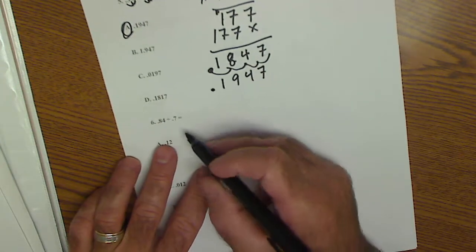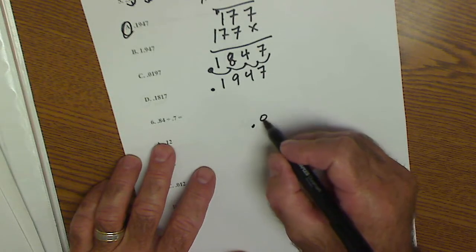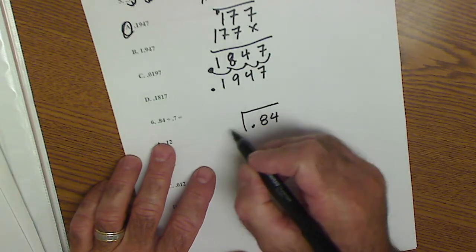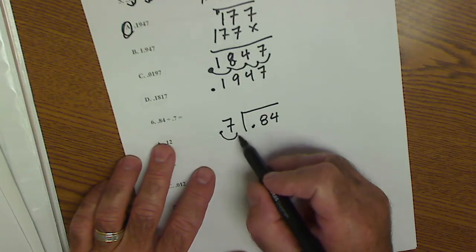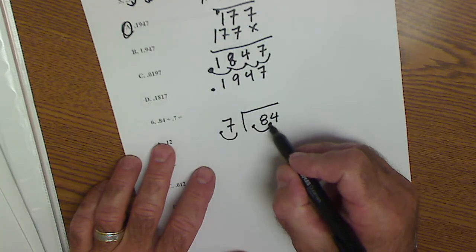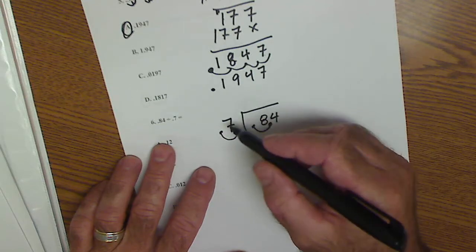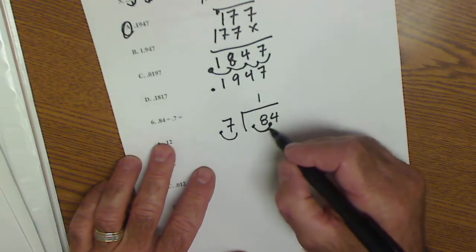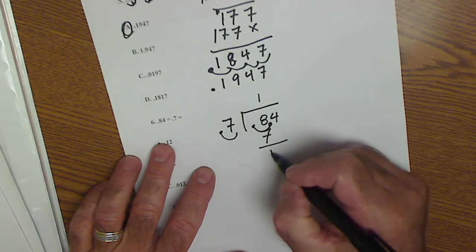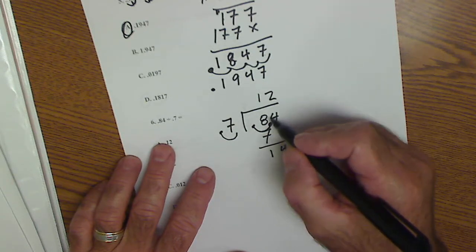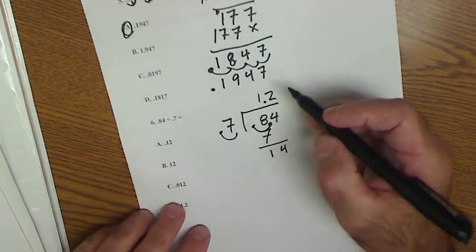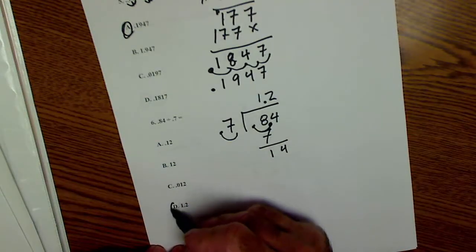Dividing decimals down here: 0.84 divided by 0.7. I'm going to move this decimal place over 1, so that means I'm going to move it over 1 here. And now I have 7 into 8 is 1. 8 minus 7 is 1. Bring down the 4. 7 into 14 is 2. Here's my decimal place. So my answer is 1.2. Answer D.